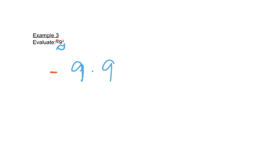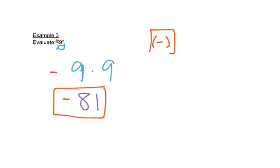So if we take nine times nine we get eighty one. And this negative that was out in front just stays out in front. And if you type this into your calculator with the negative button and then the nine, and then the x squared button because it's an exponent of two, you will get negative eighty one. Your calculator knows that there's no parentheses around it and so it only squares the nine.